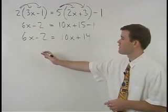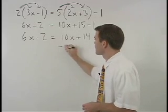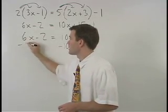Moving our variables to the left and numbers to the right, we start by subtracting 10x from both sides.